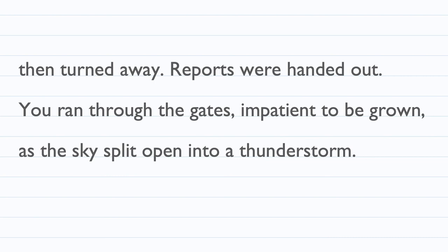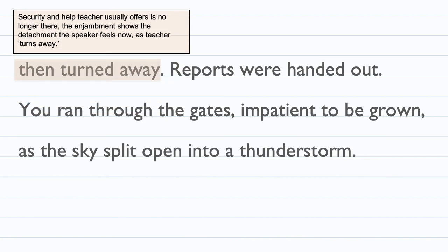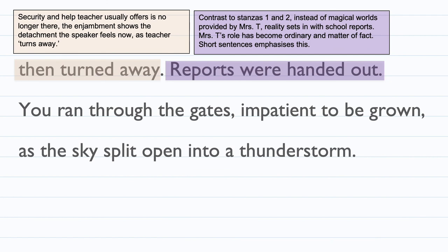'Mrs Tilscher smiled and then turned away. Reports were handed out. You ran through the gates, impatient to be grown, as the sky split open into a thunderstorm.' Mrs Tilscher turned away — the security and help the teacher usually offers is no longer there. The enjambment shows the detachment the speaker feels as the teacher turns away, with a sense of betrayal. She trusted her teacher, but now her teacher turns her back and she must discover things on her own. 'Reports were handed out' contrasts with stanzas one and two — instead of pupils exploring magical worlds, reality sets in; Mrs Tilscher's role has become ordinary and she's no longer the magical teacher whisking them away.